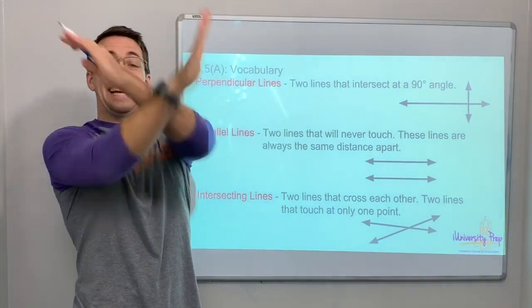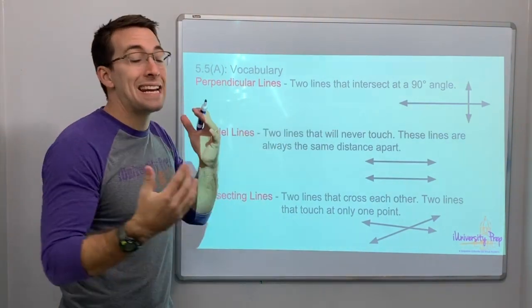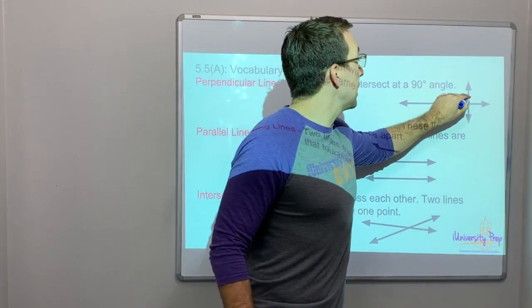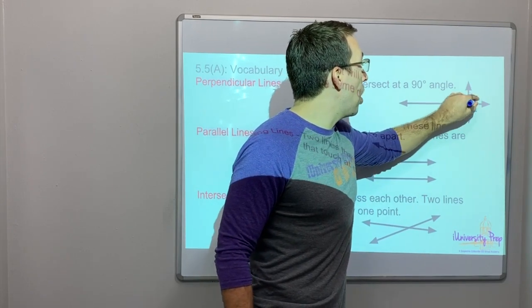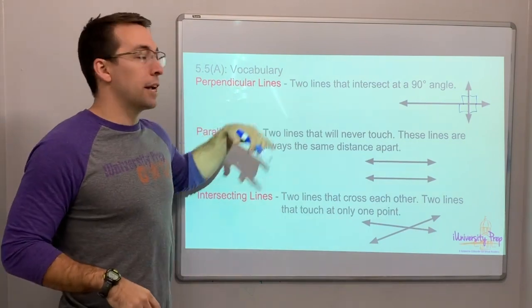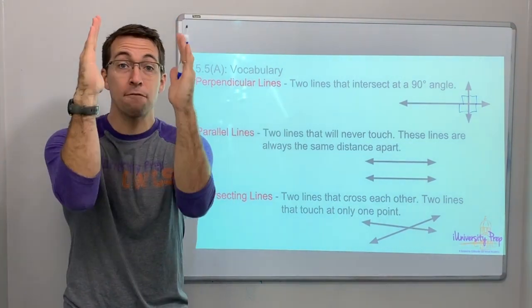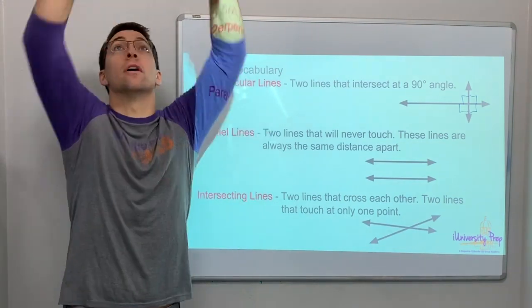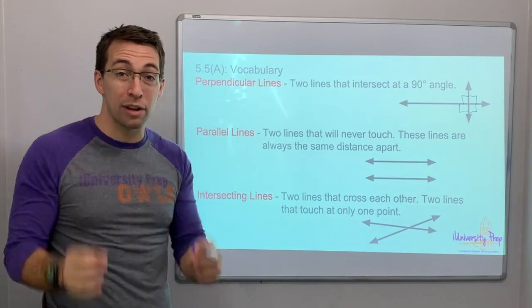Perpendicular lines make these lines intersect at 90 degrees. This angle is 90 degrees, this angle is 90 degrees - all of those are 90 degree angles. There's four angles there, they're all 90 degrees. Parallel lines never touch. Nowhere. They're never ever going to touch. Parallel lines will never touch.